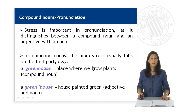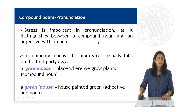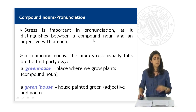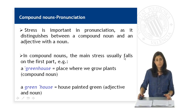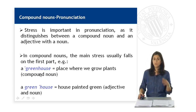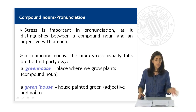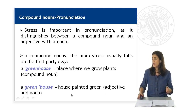Pronunciation is really important when dealing with compound nouns since the stress must be placed correctly. When we pronounce a compound noun, we can distinguish between a compound noun and an adjective with a noun, depending on the pronunciation. In a compound noun, the main stress usually falls on the first part. For example, 'a greenhouse' is a compound noun referring to a place where we grow plants. But 'a green house' — with stress on both words — refers to a house painted green, where we have an adjective and a noun.